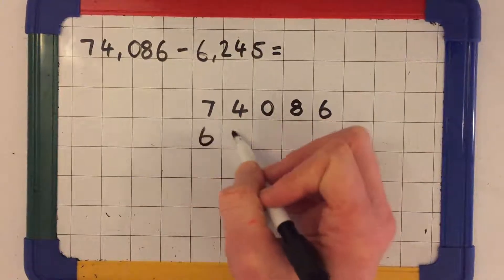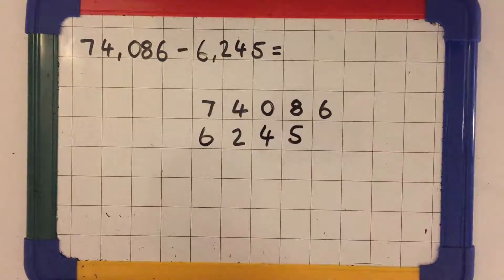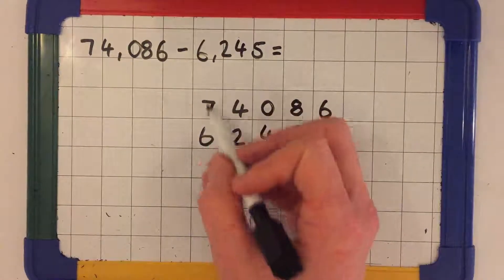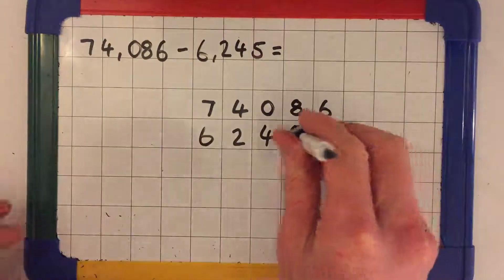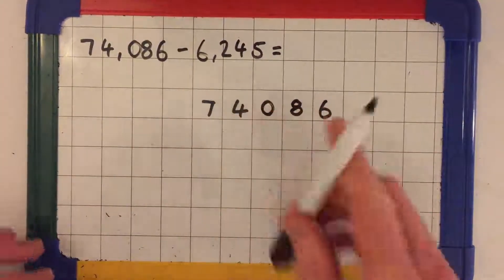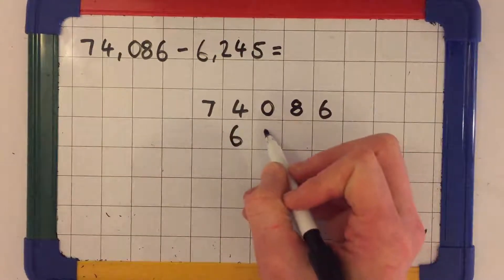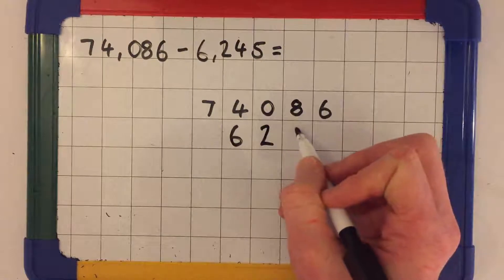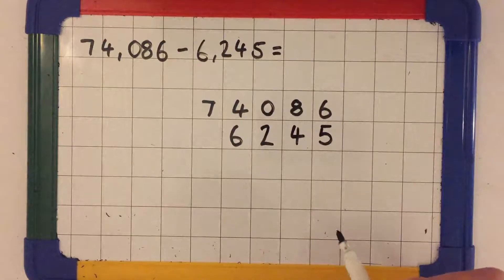If you were to write out your equation like this, you are going to get the incorrect answer because you've put your six thousands in the ten thousand column, your two hundreds in the thousand column. You need to make sure that you put all your thousands underneath each other, all your hundreds underneath each other, your tens underneath each other, and finally your ones underneath each other.